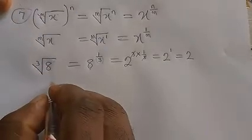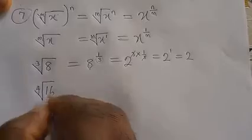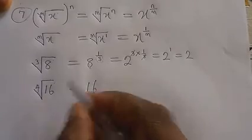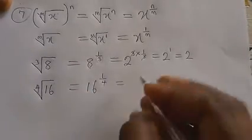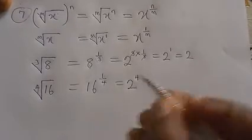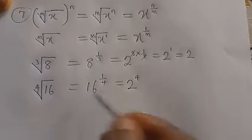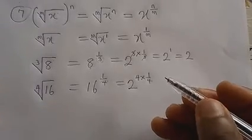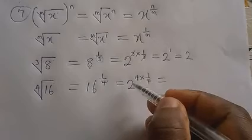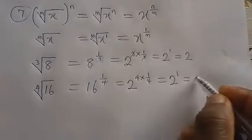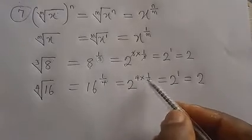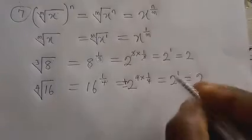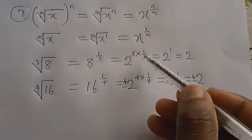Another example: 4th root of 16 = 16 raised to power 1/4. Since 16 = 2⁴, this is 2⁴ raised to power 1/4. Now pay close attention — many people quickly say the answer is 2 raised to power 1, which equals 2, but that is wrong. Because 4 is an even number, when you cancel even powers, you must include plus or minus.